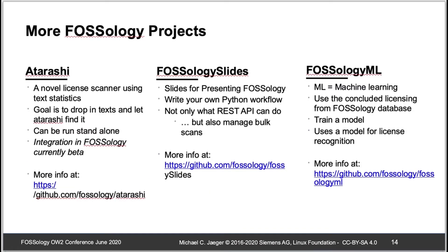There are more FOSSology-related projects. Atarashi is a novel license scanner — a command line scanner, not a UI project. We would like to build a new scanner module with Atarashi based on information retrieval metrics, as a complement to the traditional approach of text comparison, regular expressions, or keywords. Another project is FOSSology Slides — a one-day course published on GitHub where any party can take the slides and give their own FOSSology training. There is also FOSSology ML, an experiment exploring how useful machine learning would be for license identification.